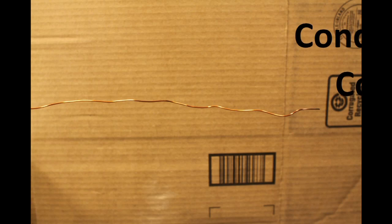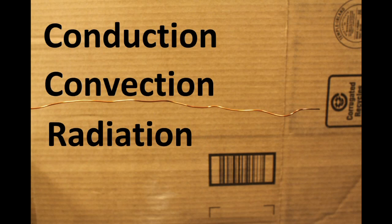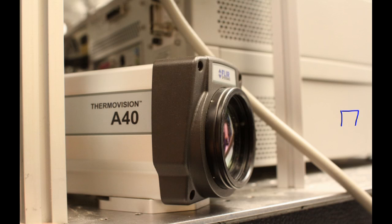We will look at three different types of heat transfer: conduction, convection, and radiation and find examples where they occur around us. To do this, we'll use a thermal camera.